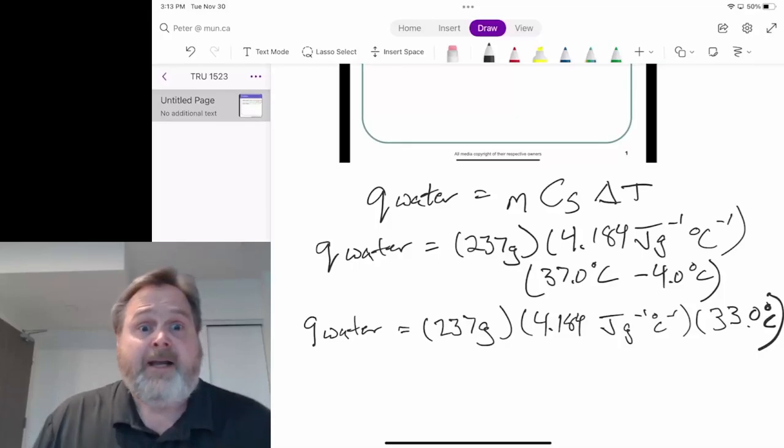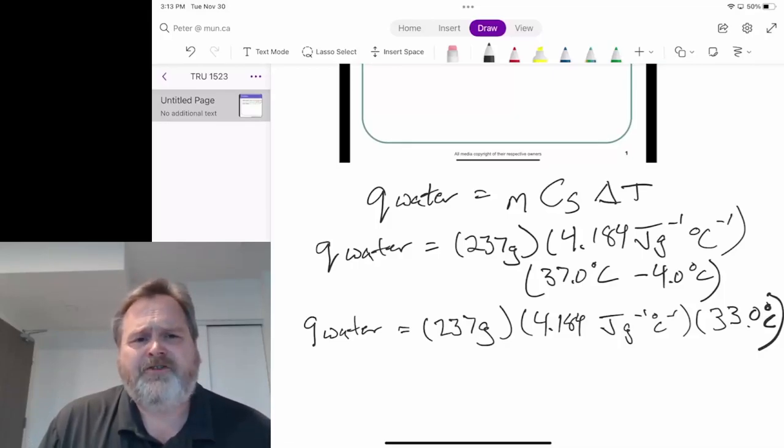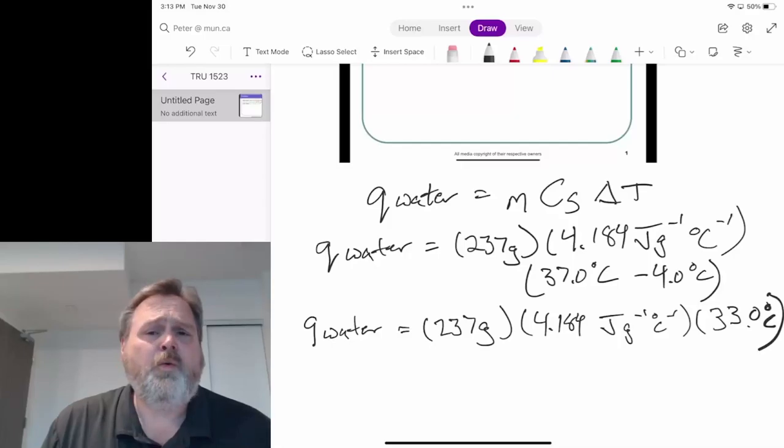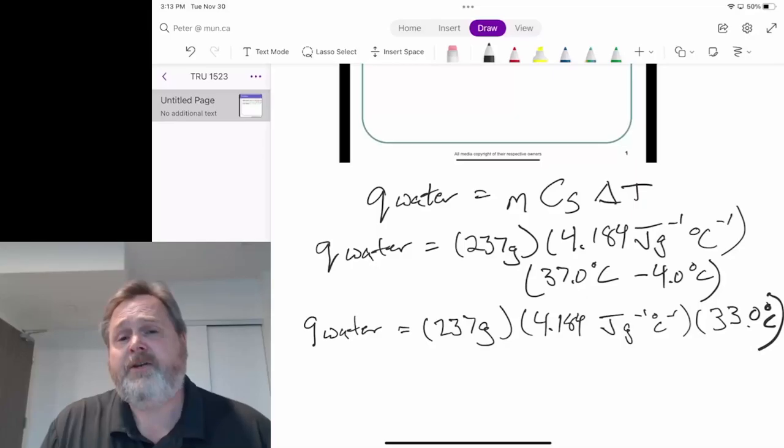Notice how this temperature change is given in degrees Celsius. We would have seen for the ideal gas law that we needed temperatures to be in Kelvin. Yet here, we're dealing with temperatures in degrees Celsius. Why can we do that? Well, this is not a temperature measurement, it's a change in temperature measurement, and that's what's making all the difference here.